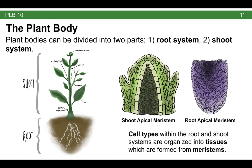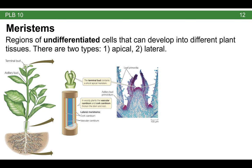With the root apical meristem, there are special cells that help orient the plant to grow down, and conversely with the shoot apical meristem, there are cells that help it grow straight up. These are often abbreviated as SAM — shoot apical meristem — and RAM — root apical meristem. Because meristems are so important, we'll expand on this a little bit.